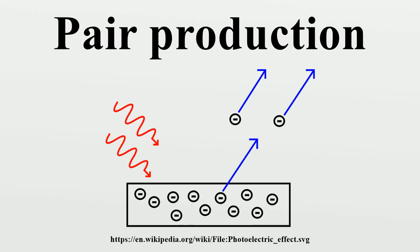Pair production is the creation of an elementary particle and its antiparticle, for example creating an electron and positron, a muon and antimuon, or a proton and antiproton.